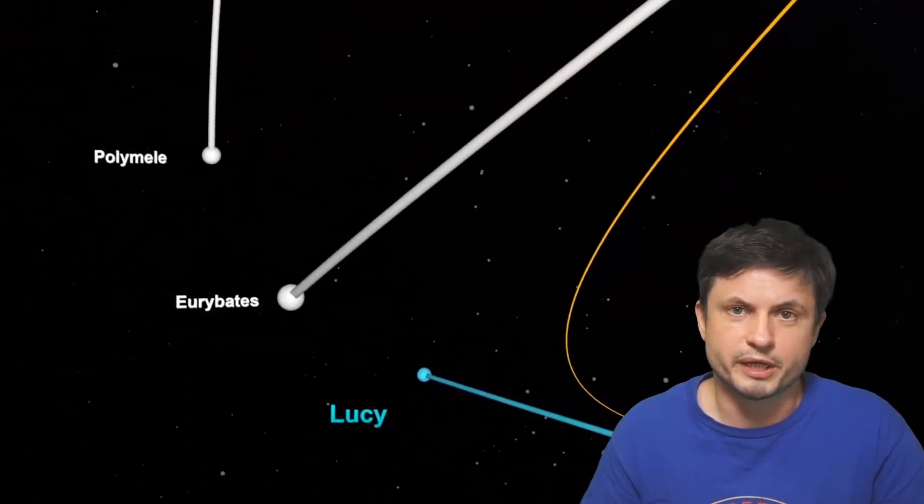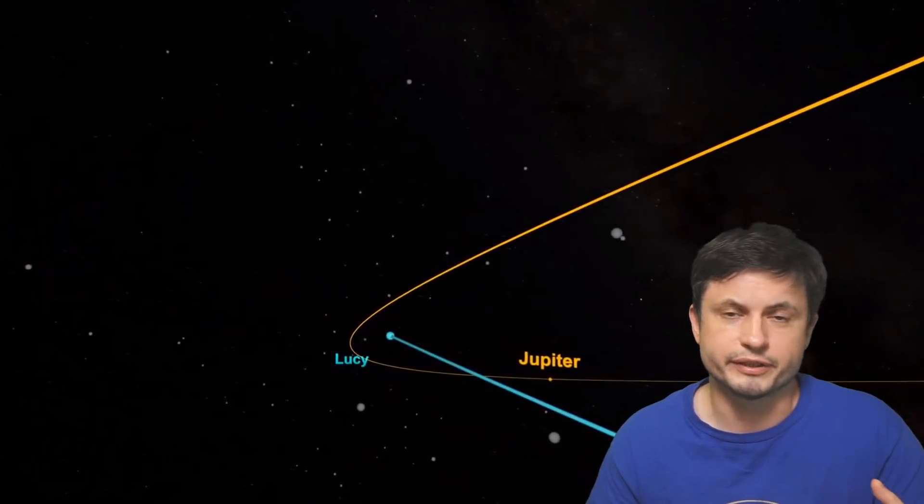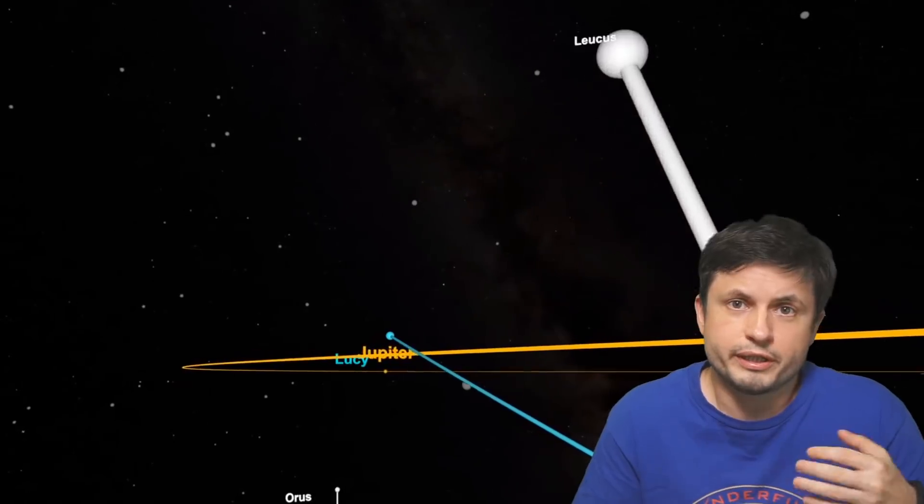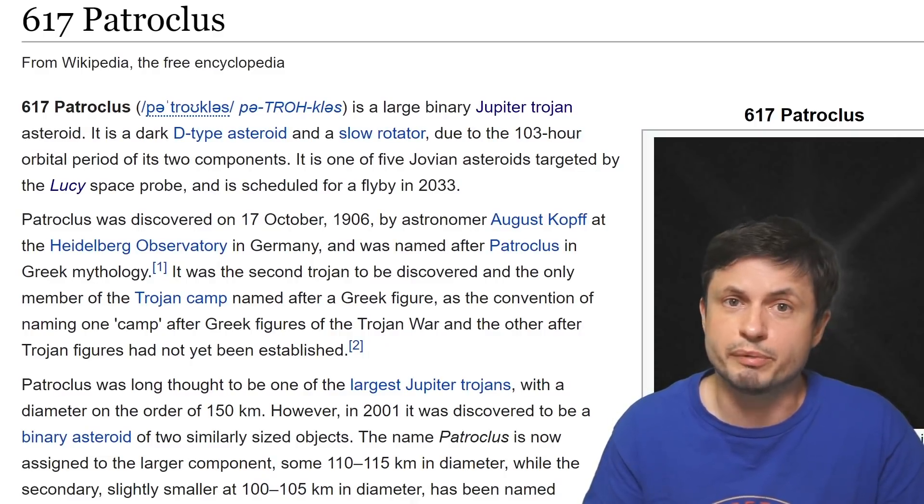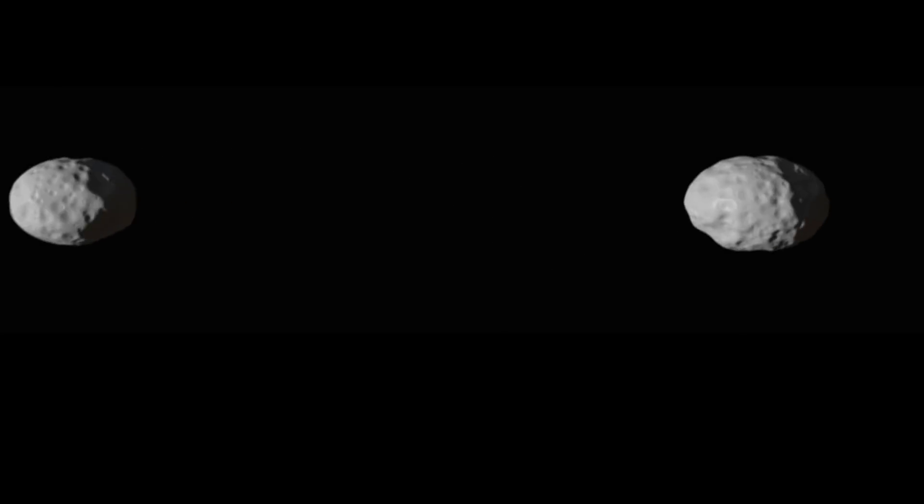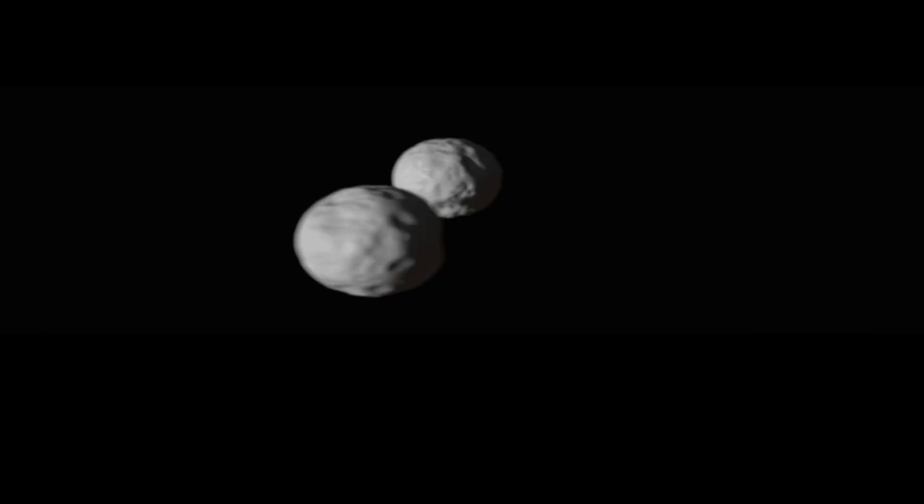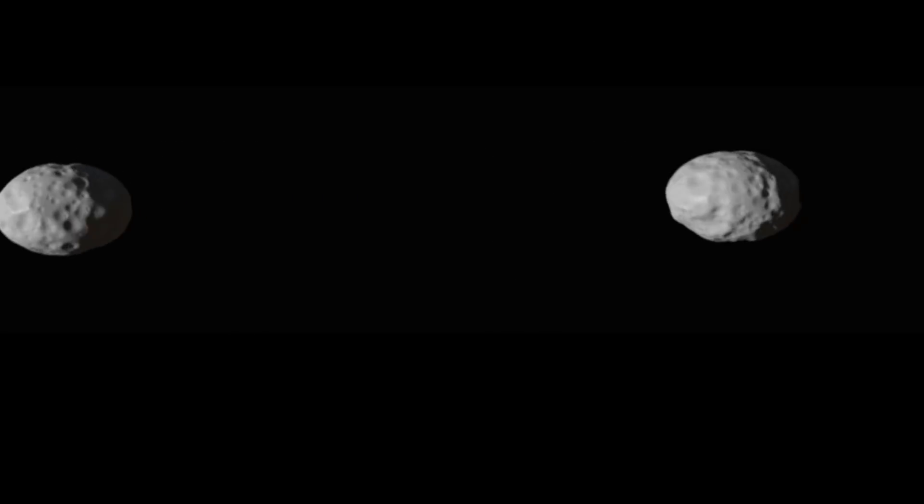Following this, Lucy is going to return back to Earth for another push from planet Earth, and then is going to go on the other side, to the other Trojan camp, or the other Lagrange point on the other side of Jupiter. And here it's visiting an extremely interesting binary system, a binary asteroid known as Patroclus. And today it's believed that Patroclus and its partner Menoetius might have actually come from farther away in the solar system, possibly even from the Kuiper Belt.